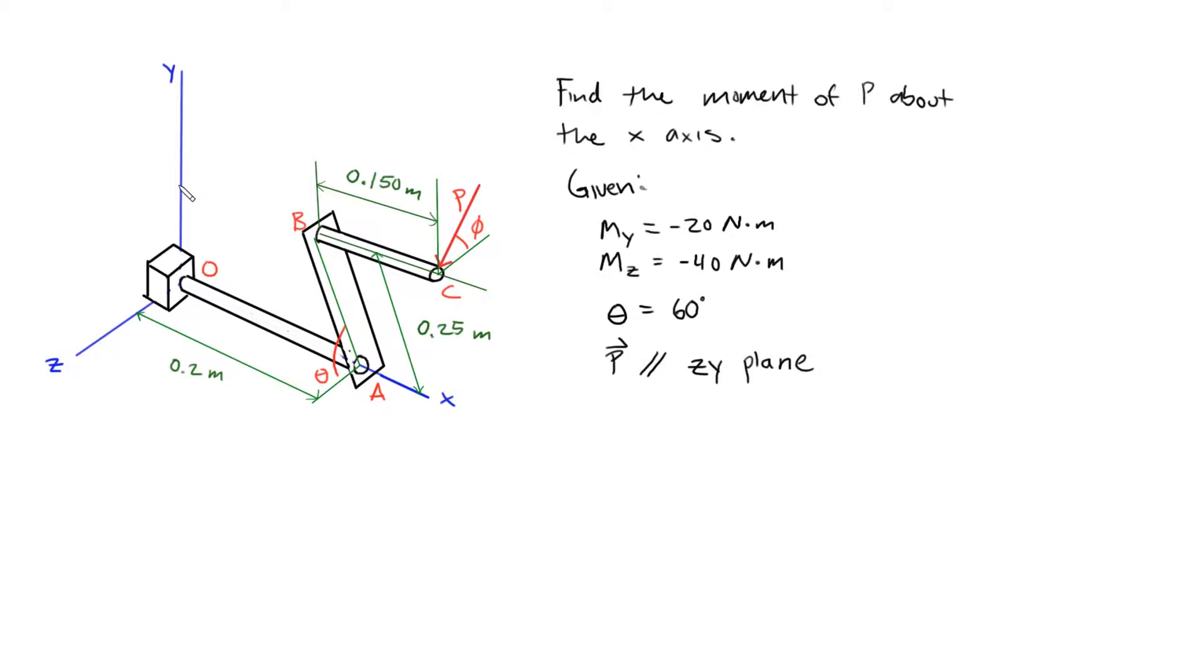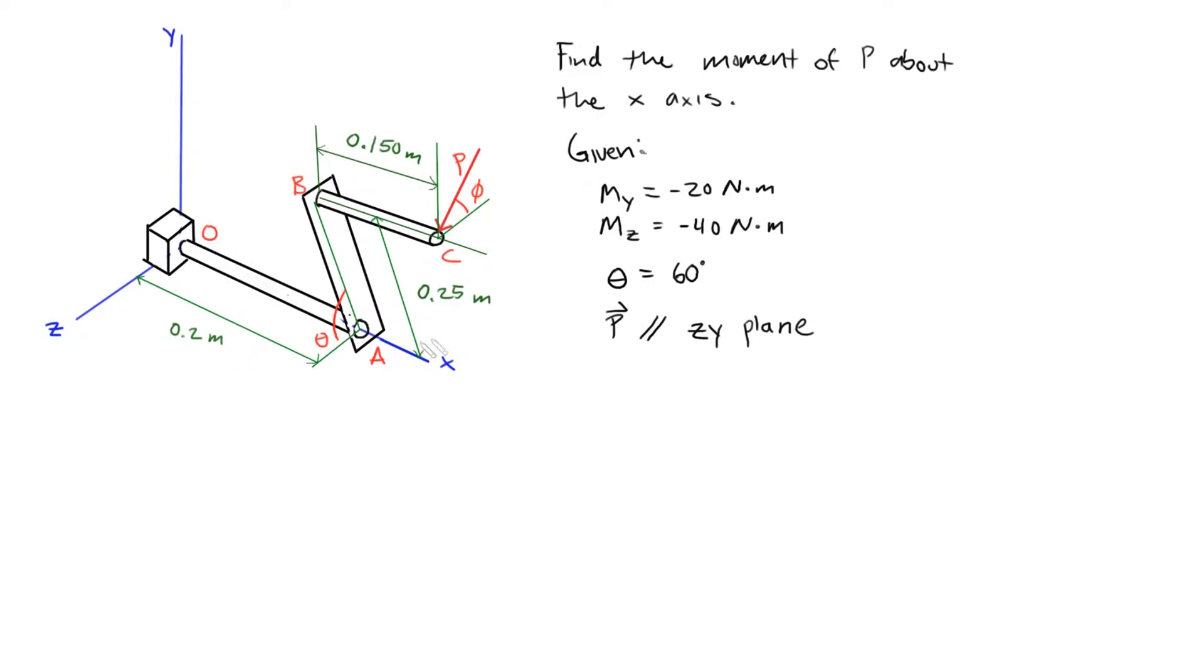If you do that, you actually have a moment going in this direction, which is a negative moment defined by right here. So that's just what it means when you have a negative moment, assuming that we're using a right-hand coordinate system and the right-hand rule.